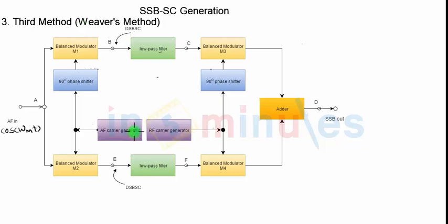If you carefully observe this time, we have got two carrier generators. One is called AF carrier generator, the other one is called RF carrier generator. That means we have two carrier frequencies being used right now.